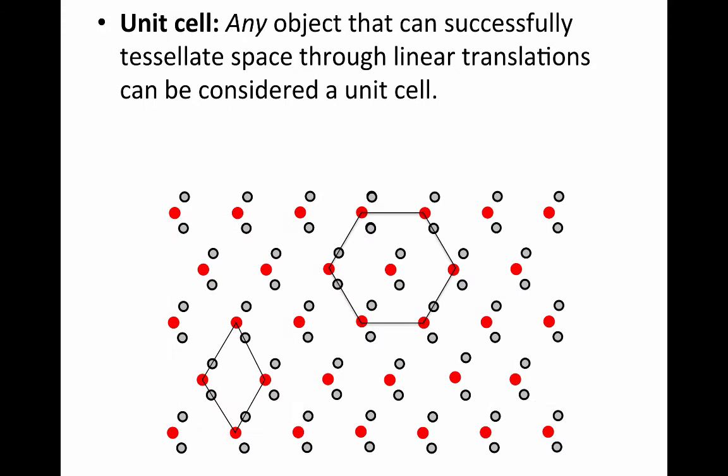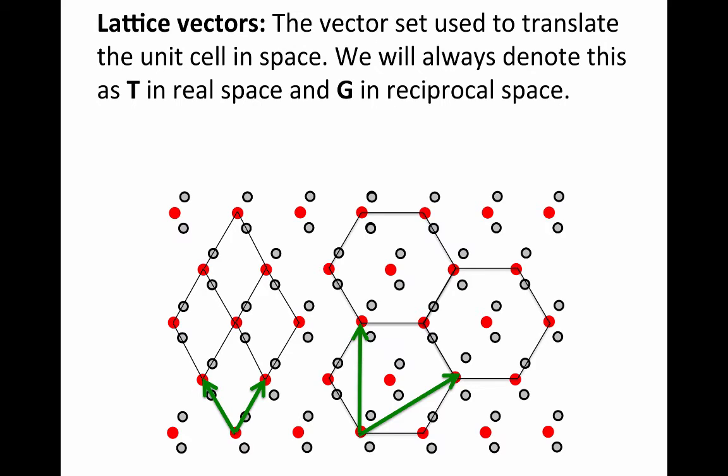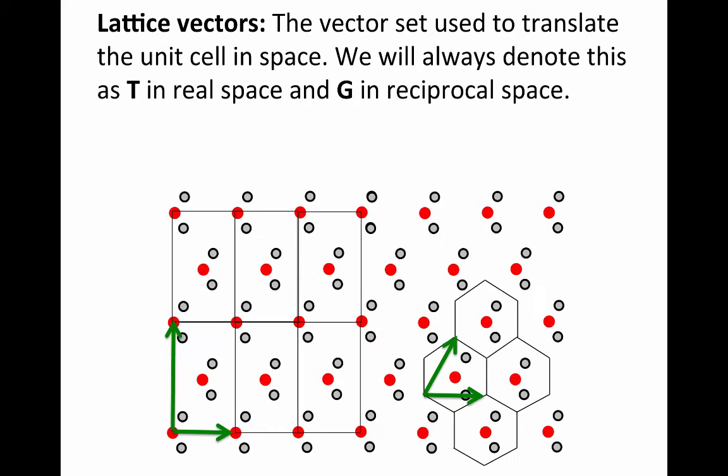We can also pick other unit cells like the diamond structure here or this bigger hexagon up here. We can see that these also translate through space. So when we're talking about these translations, what that suggests is that an underlying set of lattice vectors that are required to do this translation of the unit cell or this tessellation across space.